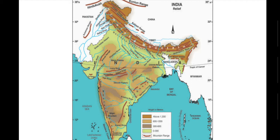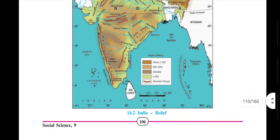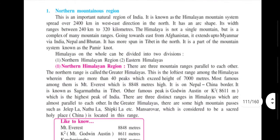The map shows mountain ranges with heights — approximately 1200 and 600 — indicating distances. The Northern Mountainous Region includes the great Himalayan system, which stretches about 2400 km, extending from Afghanistan to Myanmar. In Tibet, this mountain system connects to the Pamir Knot.